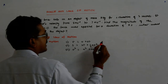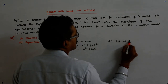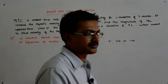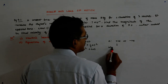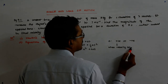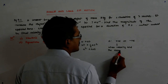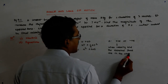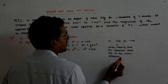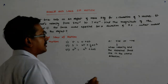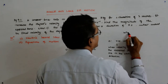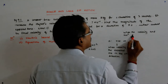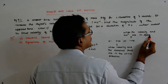We have to understand that acceleration 'a' could be positive or negative. When is it positive? When the velocity and the external force are in the same direction, the acceleration is positive. It is negative when the velocity and acceleration are in opposite directions.